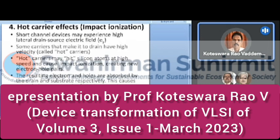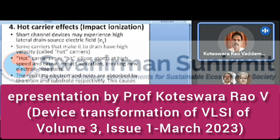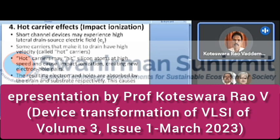Hot carrier effects (impact ionization): short channel devices experience high lateral drain-source electric fields, causing some carriers to reach the drain at high velocity — these are called hot carriers. Hot carriers hit silicon atoms causing impact ionization, creating new electron-hole pairs, which increases substrate current. Some hot carriers, under the influence of gate voltage, enter the thin gate oxide, forming a gate current as well. These are the effects of hot carriers.